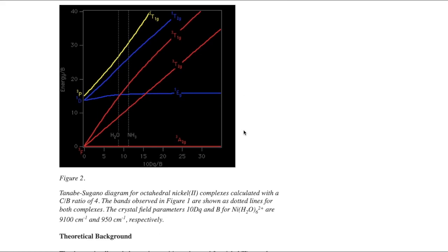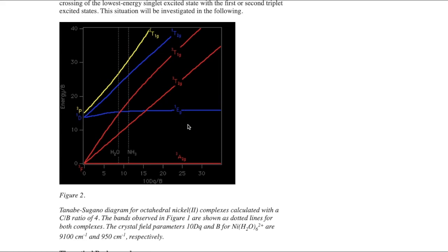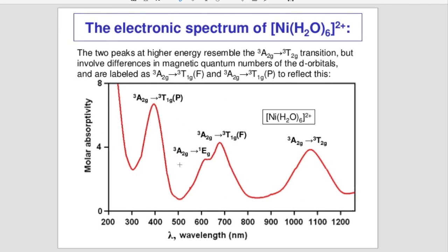From the Tanabe-Sugano diagram you can see that from 3A2g it can go to 3T1g, to 1E1g, and also to another 3T1g. This transition to 1Eg is a weak transition because the spin multiplicity is changing — it is both spin-forbidden and Laporte-forbidden. That is why I think the answer should be 1Eg. Let me show you an image from a Google search to illustrate this.